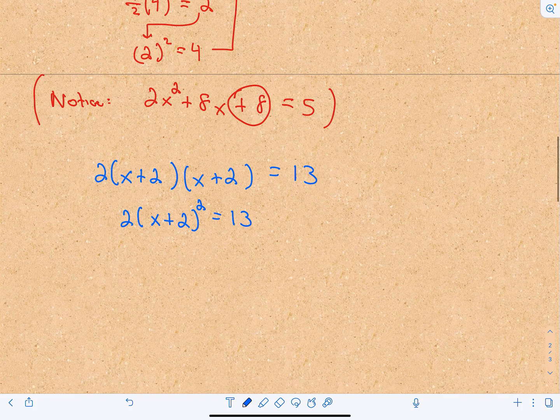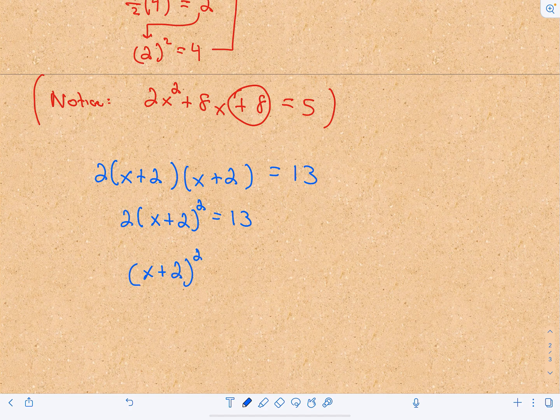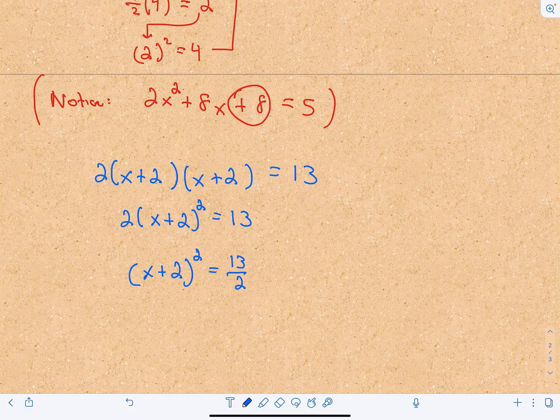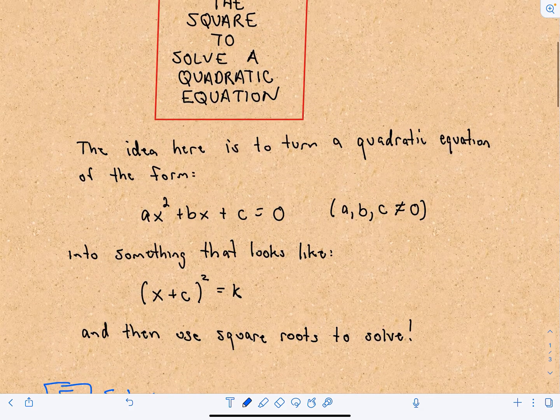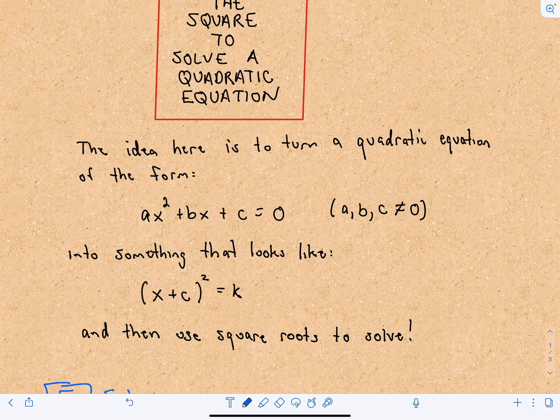Now I can divide by this coefficient. If I divide both sides by 2, I have (x + 2)² = 13/2. Notice I've taken my equation that looks like this, did some work, and now it looks like this.